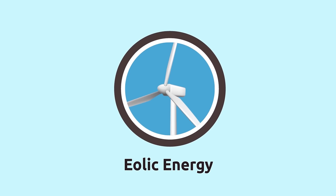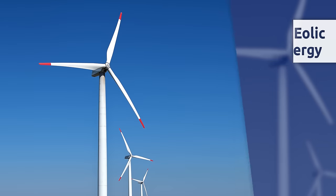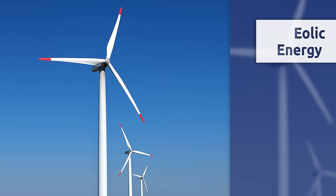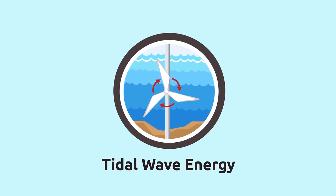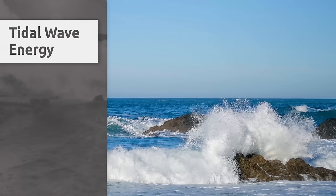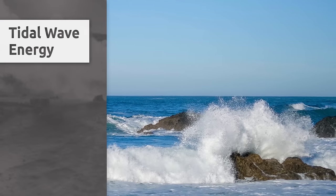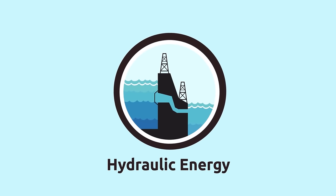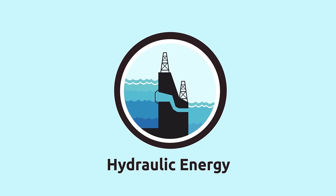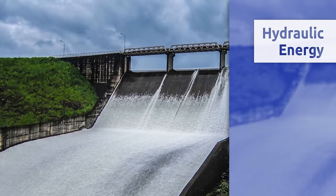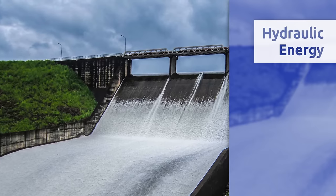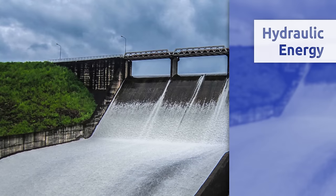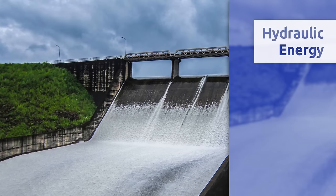Eolic energy comes from the movement of air or the wind — for example, windmills transform wind into electric energy. Tidal wave energy comes from the movement of sea waves or when tides change from high to low and vice versa. Hydraulic energy is produced by the water stored in reservoirs or artificial lakes. Look at this dam: water falls from a high spot, then flows through a hydroelectric factory where the force of the water is transformed into electric energy.